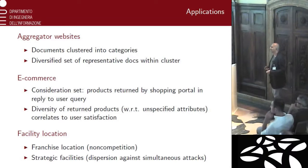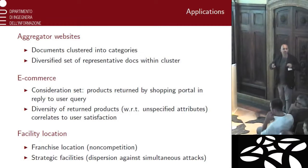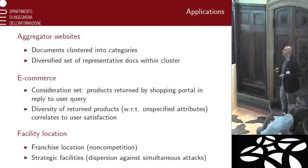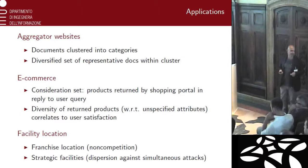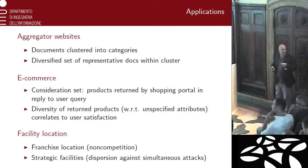There are more classical applications of diversity in facility location. For instance, franchise location: you want to set points in the plane which cover the whole customer reservoir basin, but at the same time they don't compete with one another. Franchise location requires diversity. Also, the location of strategic facilities — you want to disperse the facilities so that they are immune to simultaneous attacks. There are more applications, for instance in heuristics for hard combinatorial problems and so on.